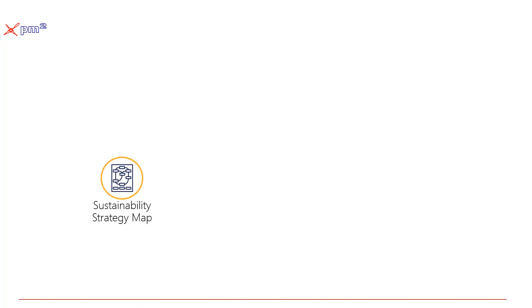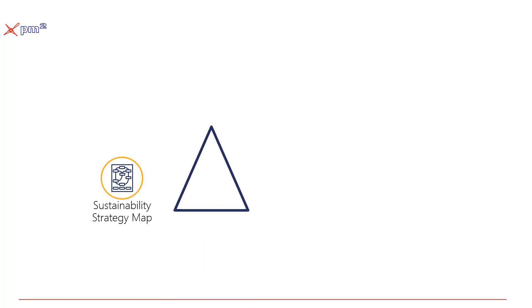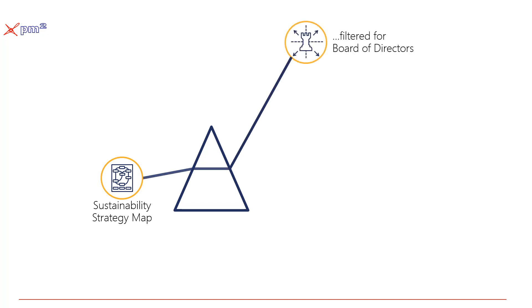What if we took that sustainability strategy map we've been talking about to enable the Sustainability Scorecard, and then built some sort of prism where we could reflect this in the eyes of different viewers? For example, we could filter it and provide for your board of directors the information that allows them to make their decisions and fulfill their fiduciary responsibilities.